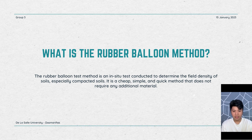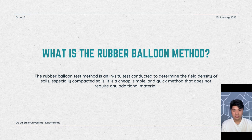The rubber balloon method is mainly used for soils with high field density and an uneven distribution of particles. This method is often used in the construction industry, so people will often have soil samples from construction sites.